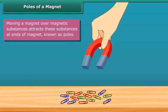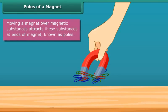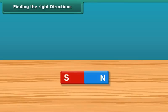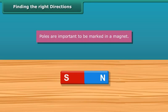When you move a magnet over magnetic substances, you will see that these substances get attracted to particular parts of the magnet only. These are generally the two ends of the magnet. These ends are called poles of the magnet. Once you know about the poles of a magnet, you should also be able to mark the location of the poles. Let us now look at why poles are important to be marked in a magnet.